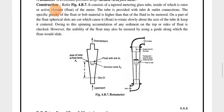As the flow of fluid increases, the float rises by a certain height h from the datum line. The area of the tube at float level is noted. On the right side diagram, a calibrated scale is marked on the transparent tapered glass metering tube. Inside this tube, there is a float or bob, along with a guide wire for the float.